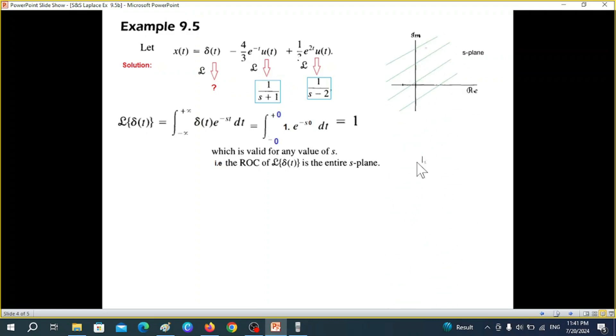So we can draw it like this. This will be diagram s plane diagram and this line shows that this ROC is all over the plane. And so our answer now will be this.